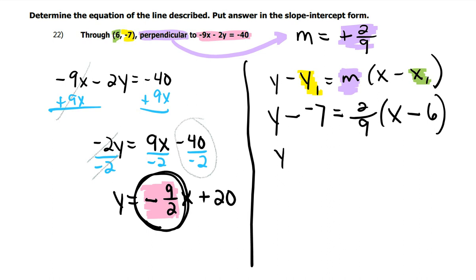Subtracting a negative is adding a positive. And then on this side, I will have to distribute the 2 9ths to the x minus 6. So 2 9ths times x is a 2 9ths x. Minus 2 9ths times 6 is going to be 12 9ths.